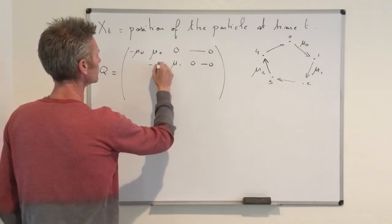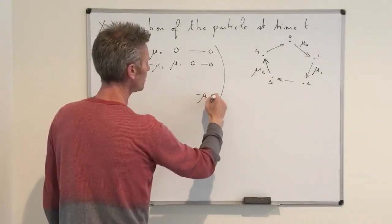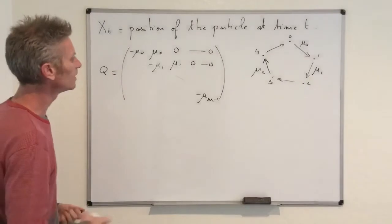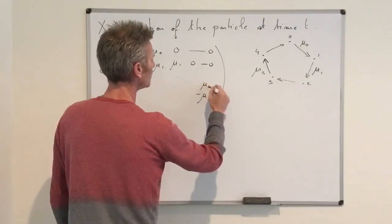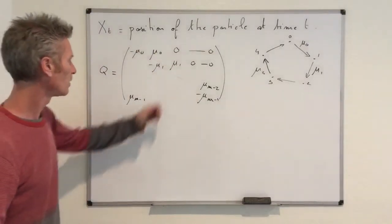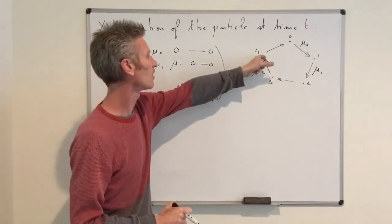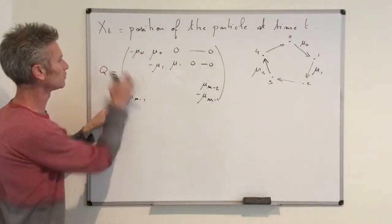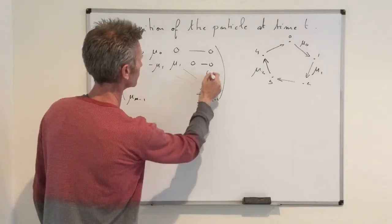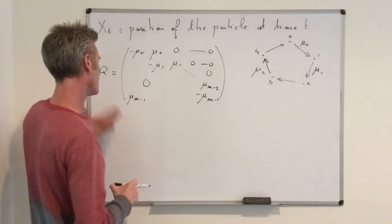On the diagonal you have minus those off-diagonal coefficients. There is one exception: in the last row, because we go around the circle, the state after n−1 is state 0. So the entry for going from state n−1 to state 0 is μ_{n−1}, and this appears in the corner of the matrix. Everywhere else below the diagonal you have only zeros except for this term. That is our Q matrix.